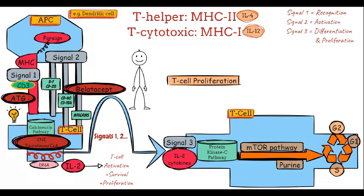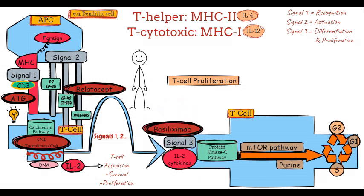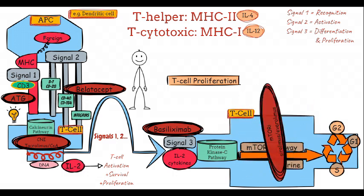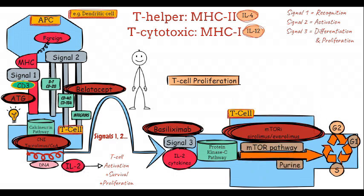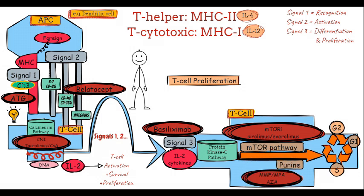Signal 3, which drives T-cell proliferation through cytokines like IL-2, is blocked by the induction agent basiliximab. The mTOR pathway is inhibited by mTOR inhibitors like sirolimus or everolimus. Additionally, antiproliferative agents such as mycophenolate or azathioprine inhibit purine synthesis, preventing T-cells from undergoing proliferation or mitosis.